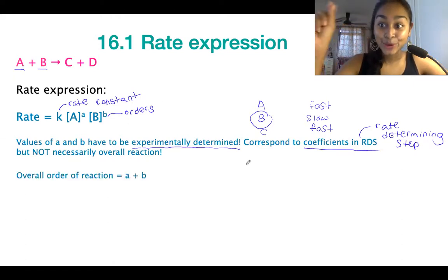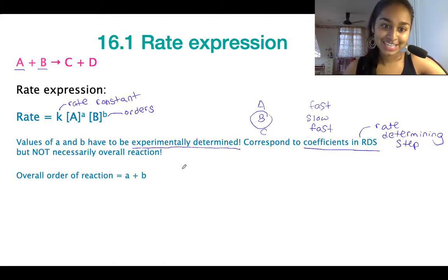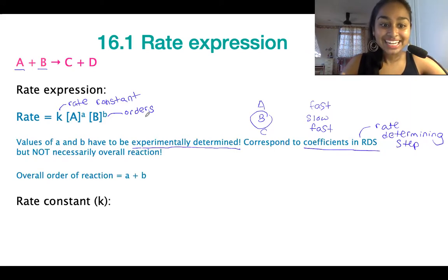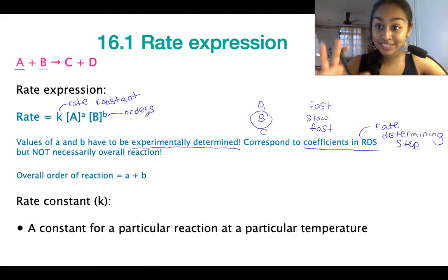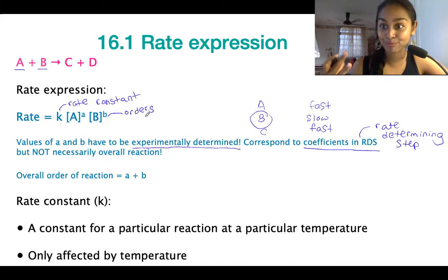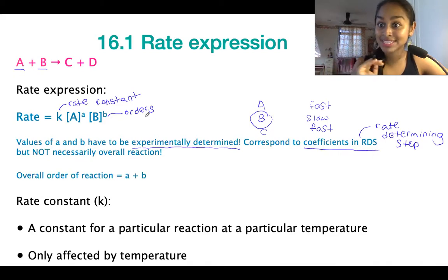In terms of calculating the overall order of reaction, we add together the orders of the reaction — so it's going to be a plus b. If you had a third reactant, then it would be a plus b plus c. Now, lowercase k is the rate constant. The rate constant is a constant for a particular reaction at a particular temperature. The only factor that changes the magnitude of K is temperature — otherwise, it remains a constant.